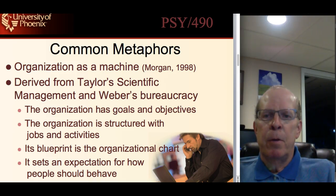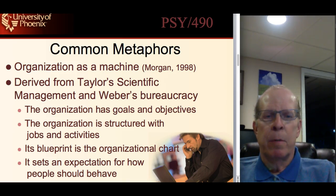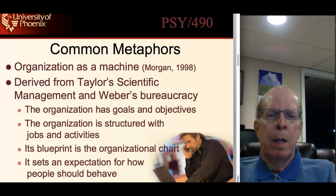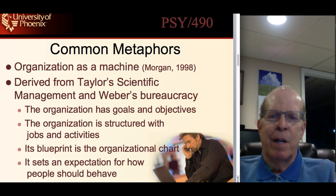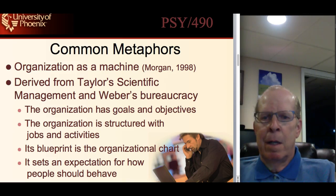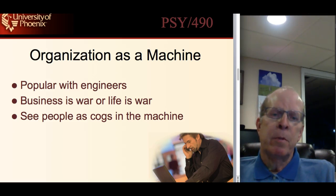Now I want to talk about a few common metaphors. Morgan identified some common metaphors in organizations. For example, the organization as a machine. This was derived from Frederick Taylor's scientific management and Max Weber's bureaucracy. The organization has goals and objectives, it's structured with jobs and activities, its blueprint is the organizational chart, and it sets an expectation for how people should behave.